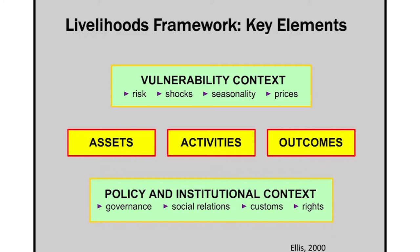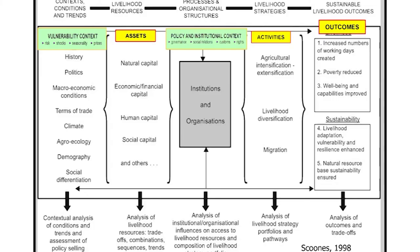At the same time there is the policy and institutional context. What is the framework for rights? What kinds of social relations exist? Women, for instance — can they do the same tasks as men or are they debarred from certain activities? What does the governance system look like? Ian Scoones develops a very similar simple framework including examples of these different elements: within vulnerability he mentions history, politics, terms of trade, climate, demography, social differentiation, gender and so on.